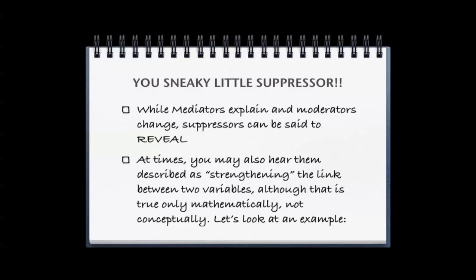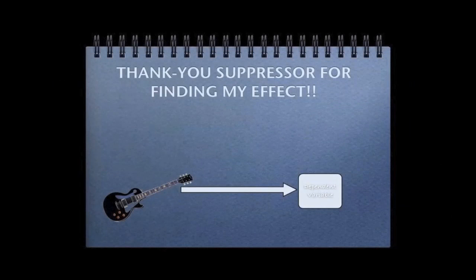Now, you also might hear this described as strengthening a relationship, but this is really only mathematically true, not conceptually. Statistically, a suppressor can be defined as any variable that explains a significant portion of a dependent variable revealing its relationship with the original independent variable. But if you're like most people, what I just said doesn't make a whole lot of sense in real life, just to statisticians. So, let me give you an example.